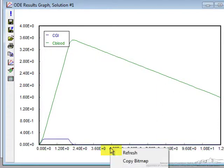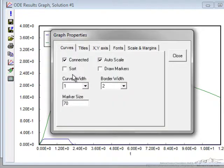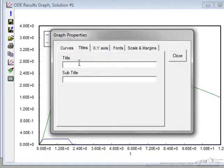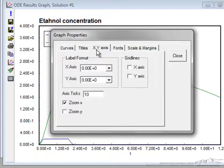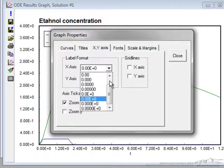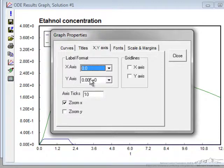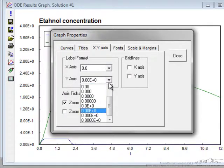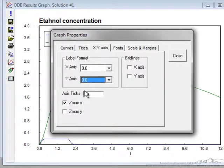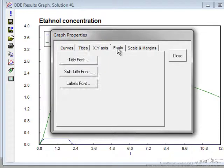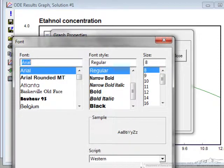If I right-click here I can format. For example, I can put a title of ethanol concentration. I can also modify the format, such as having the x-axis have one decimal place rather than scientific notation. Likewise for the y-axis. I can change the font sizes, let's make them twelve.